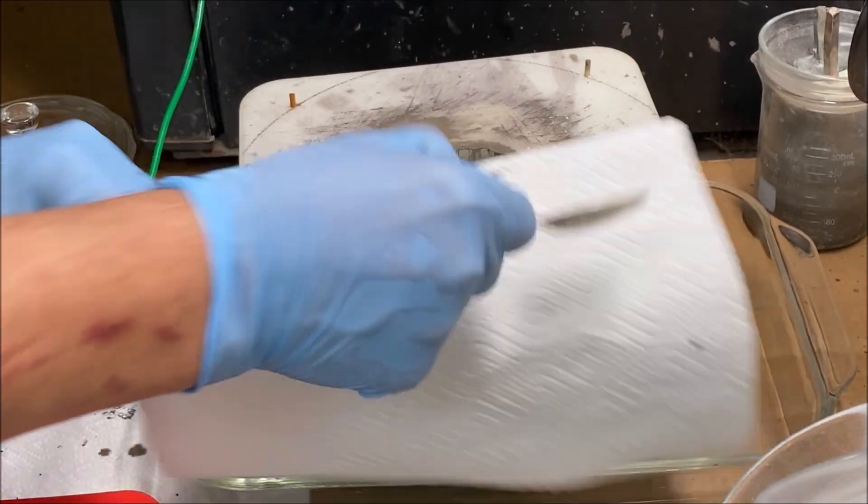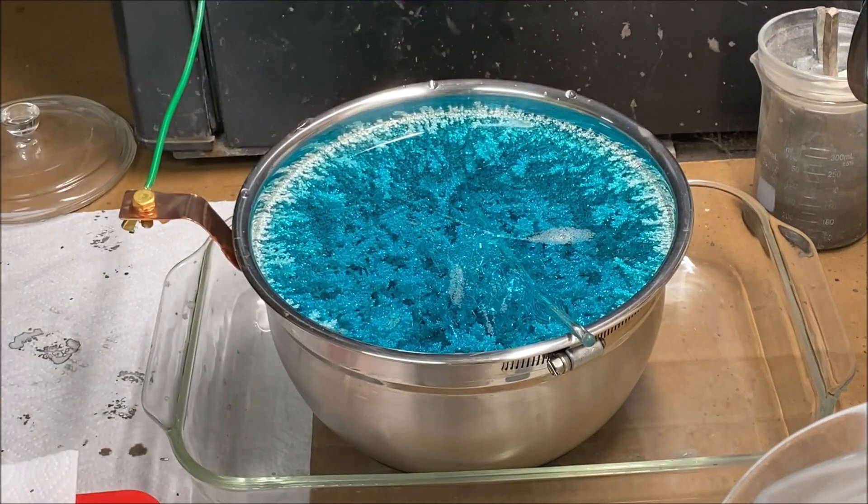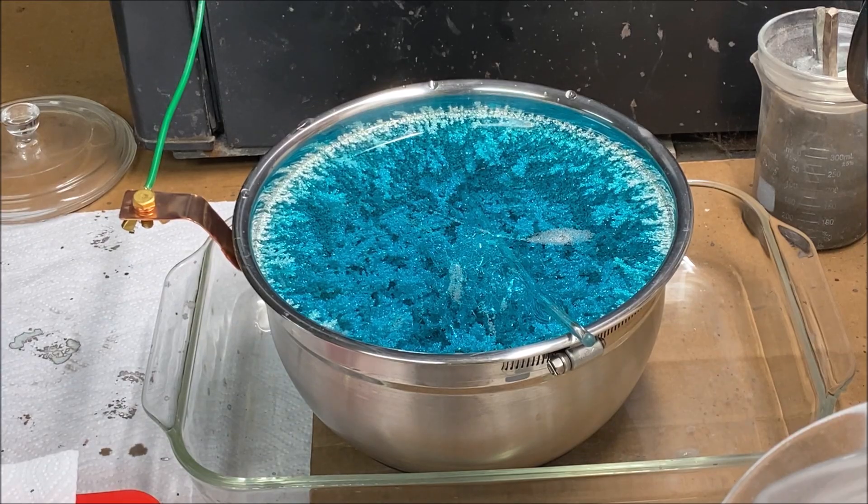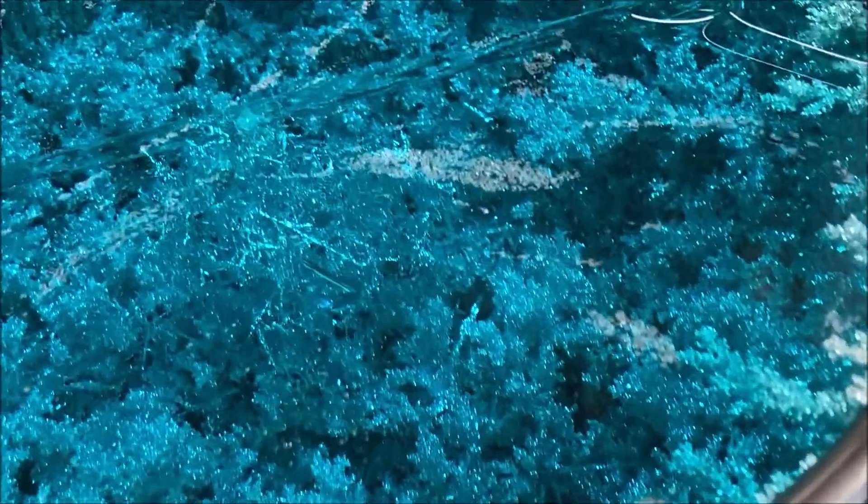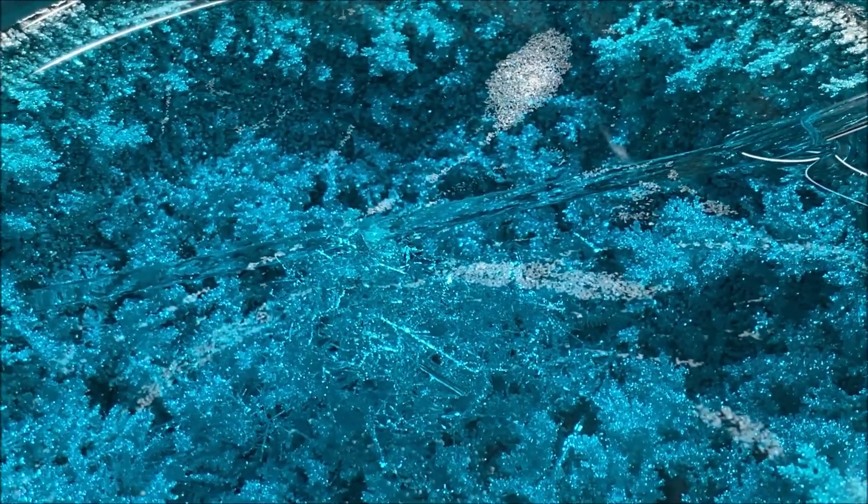All right, if you look down in here, you'll see that a plume of very fine silver crystals began to form and they actually came up and made contact with the anode basket.